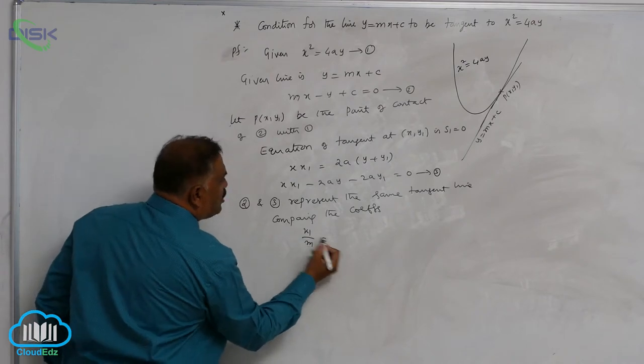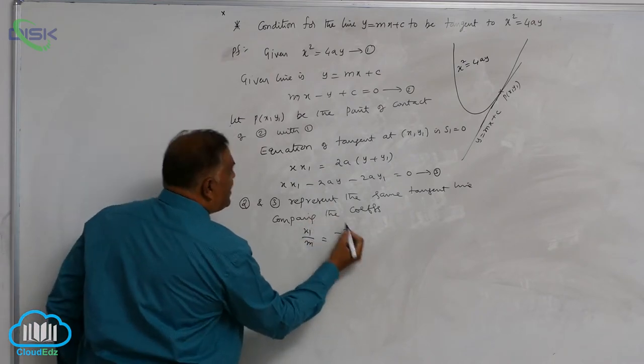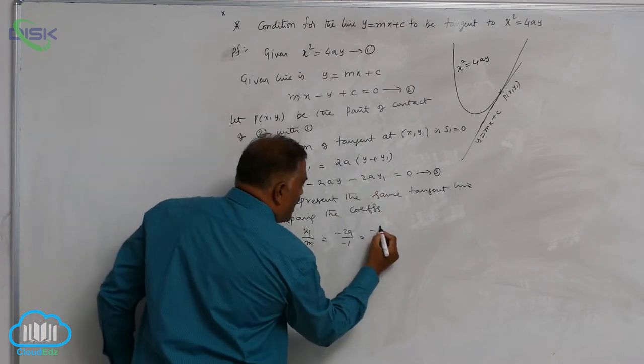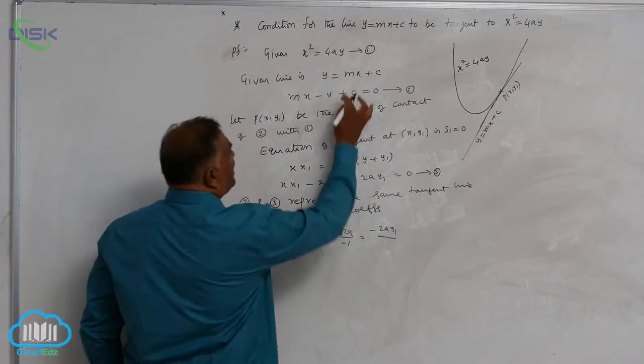x1 by m is equal to minus 2a divided by minus 1, is equal to here minus 2ay1 divided by c.